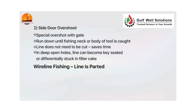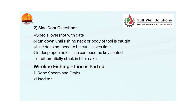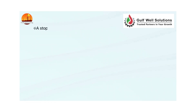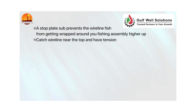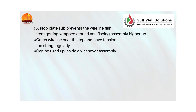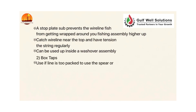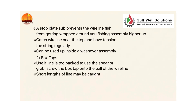Wireline fishing — line is parted. Method one: rope spears and grabs — used to fish parted wireline. A stop plate sub prevents the wireline fish from getting wrapped around the fishing assembly higher up. Catch wireline near the top and tension the string regularly. Can be used inside a washover assembly. Method two: box taps — use if the line is too packed to use the spear or grab; screw the box tap onto the ball of the wireline. Short lengths of line may be caught.